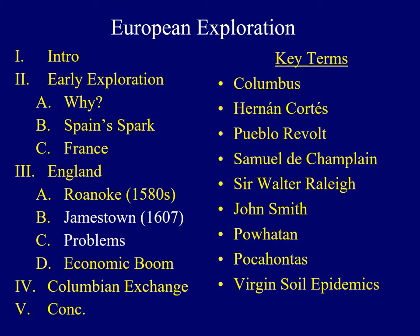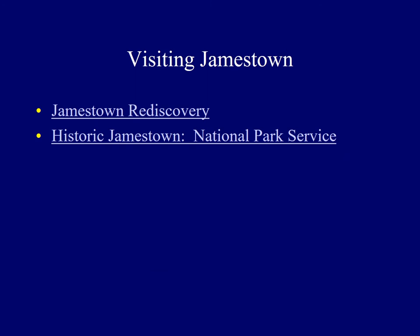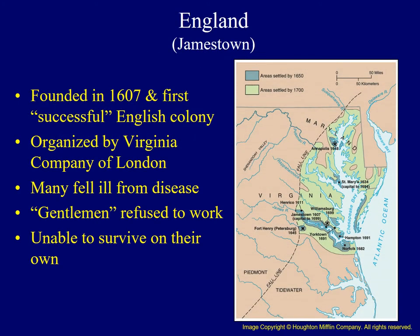The next major attempt to establish an English colony was in Jamestown, Virginia. Jamestown was first settled in 1607 and is considered to be the first successful English colony in what became the United States. The organization of the colony was not in the hands of an individual, but instead controlled by the Virginia Company of London, a joint stock company designed to make money for their investors.